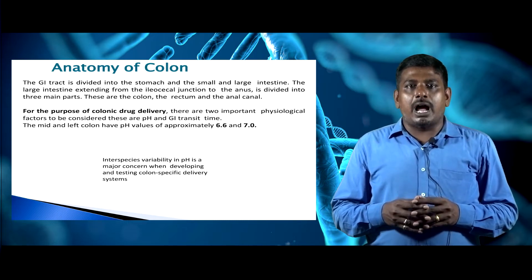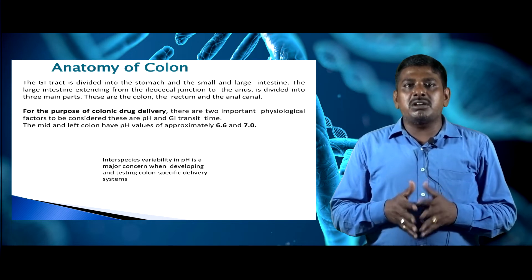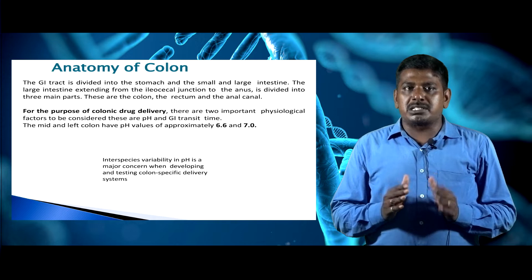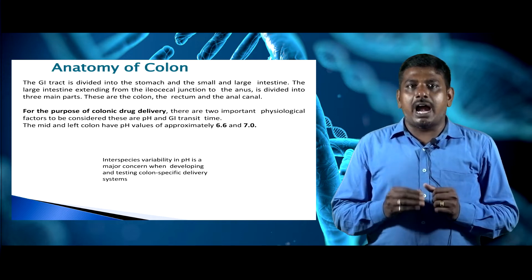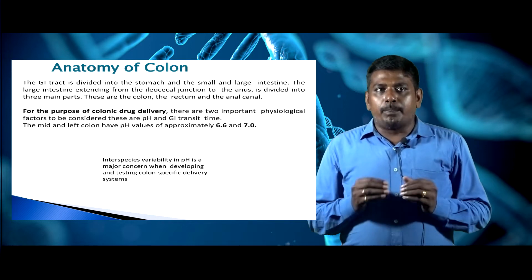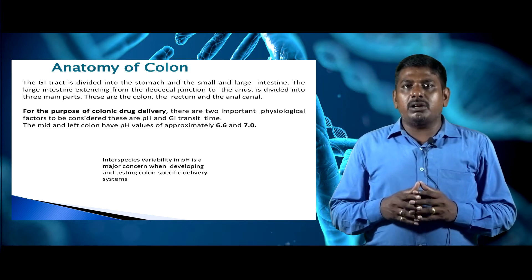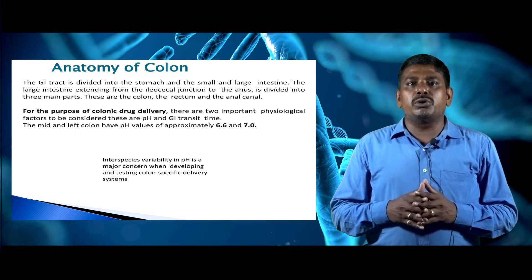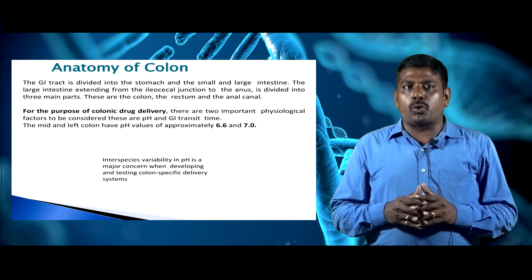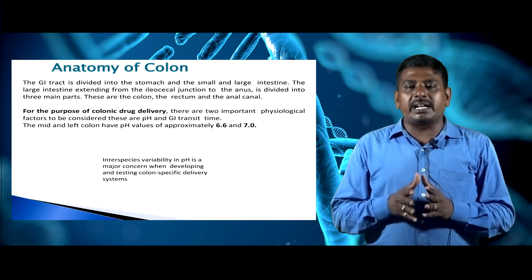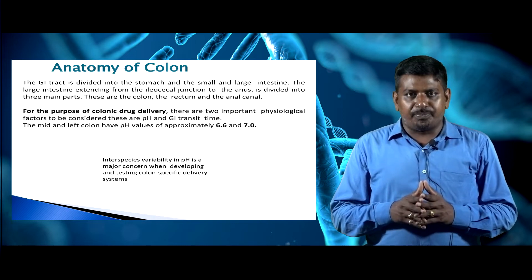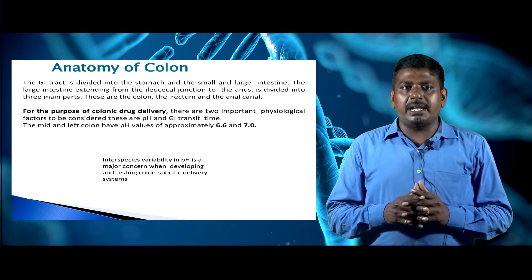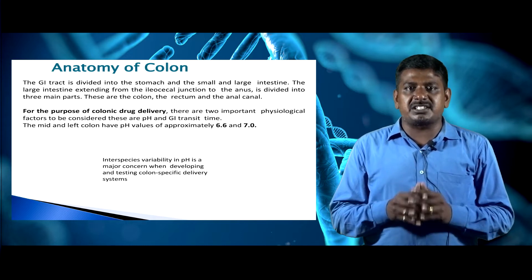According to the anatomy of the colon, the gastrointestinal tract is divided into the stomach, small intestine, and large intestine. The large intestine extends from the ileocecal junction to the anus and is divided into three main parts: the colon, rectum, and anal canal. For colonic drug delivery, two important physiological factors are pH and gastrointestinal transit time. The middle and left colon have pH values of approximately 6.6 and 7.0. Interspecies variability in pH is a major concern when developing and testing colon-specific delivery systems.